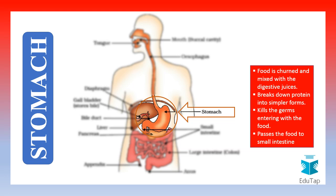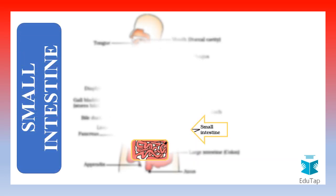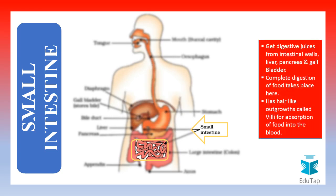Then the food is passed to the small intestine. Inside the small intestine, the complete digestion of the food takes place. The small intestine gets the secretion of digestive juices from the intestinal walls, from the liver, pancreas and gallbladder.